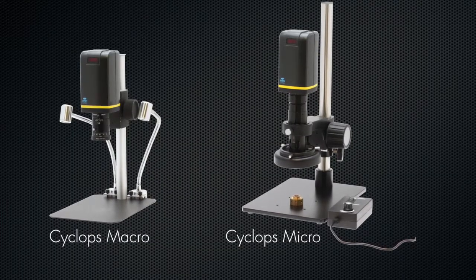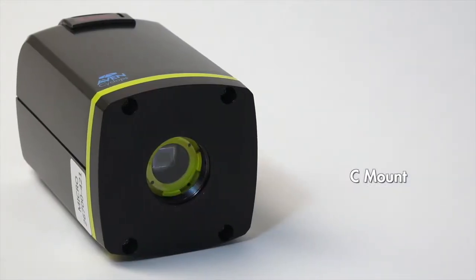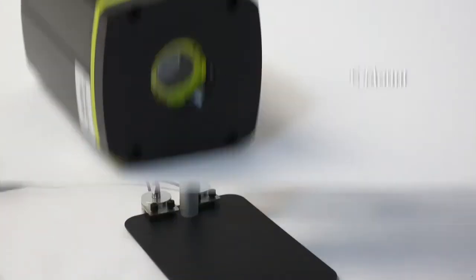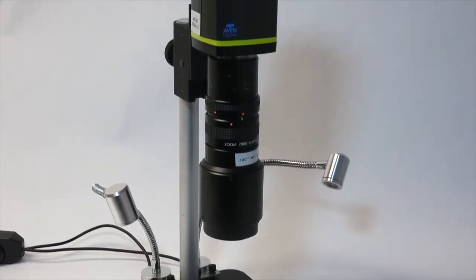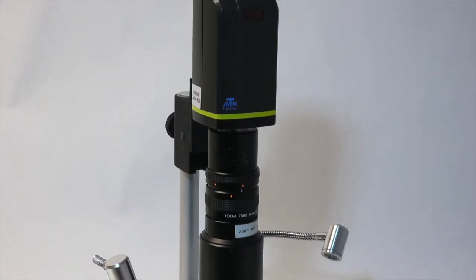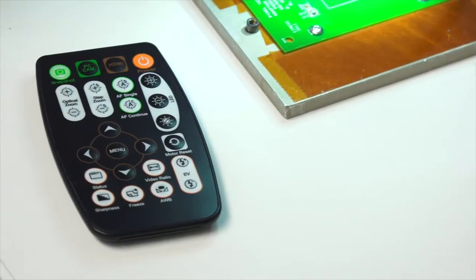Both the macro and micro units incorporate the industry standard C-mount mounting system. Any C-mount lens can be substituted for the standard micro or macro lens if needed.